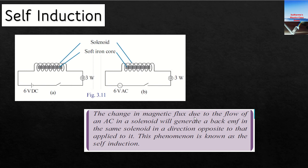The change in magnetic flux due to the flow of AC in a solenoid generates a back EMF in the same solenoid in a direction opposite to that applied. It opposes the applied EMF. This phenomenon is called self-induction.